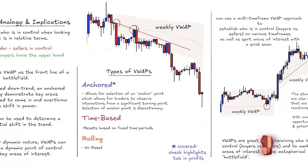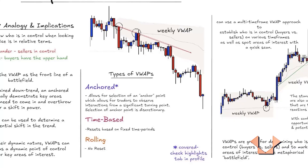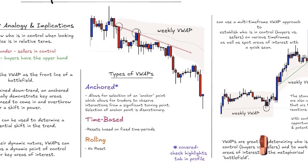The types of VWAPs: first, there's the anchored VWAP, which allows selection of a discretionary anchor point — you can place it at a major pivot low or high. Then you have the time-based VWAP, which resets based on fixed time periods — yearly, weekly, daily, or quarterly all reset to a new starting point. Finally, the rolling VWAP calculates from the end point of the previous VWAP, so a seven-day rolling VWAP won't reset like a weekly; it continuously recalculates.